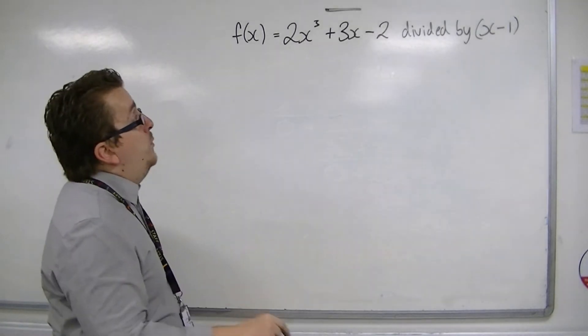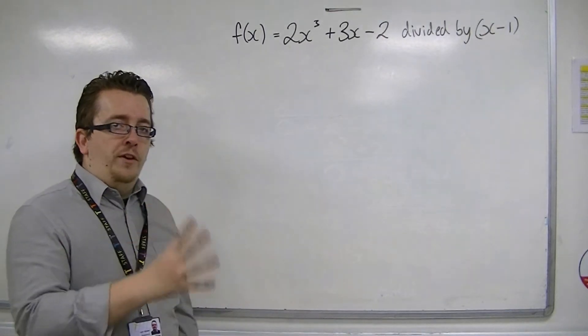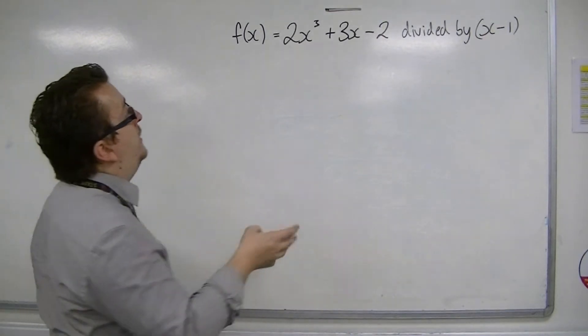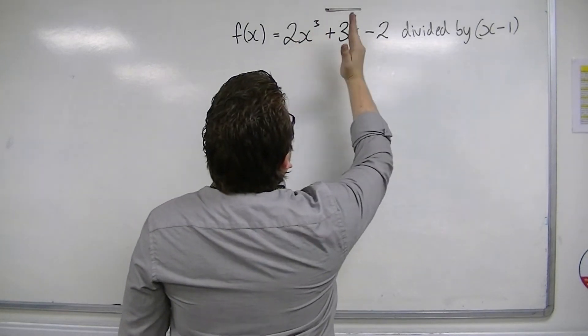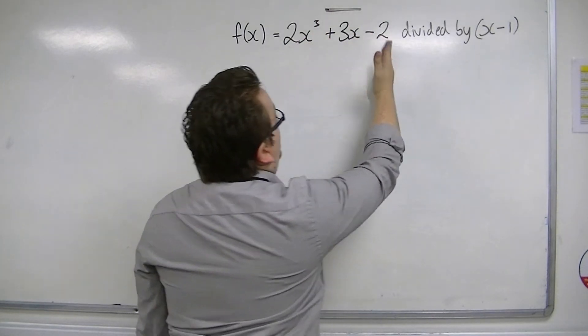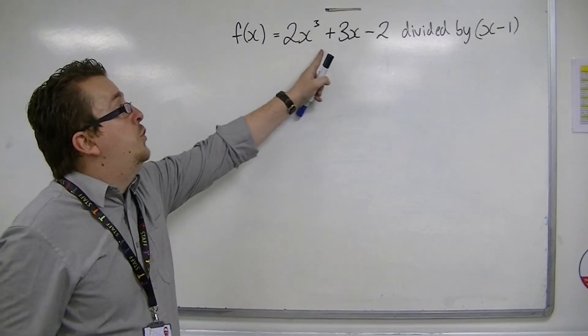When you're dealing with a cubic, a cubic in general has four terms. It has a cubic term, a squared term, a linear term, and a constant term. But this function doesn't have the quadratic term.